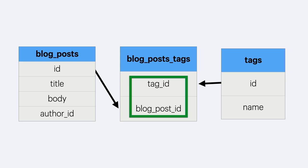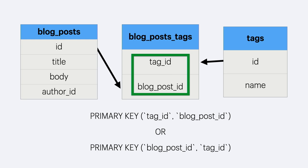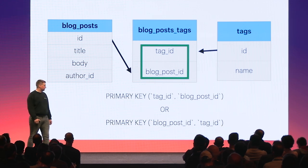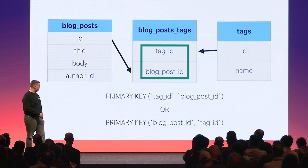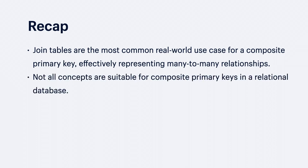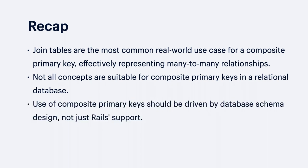When defining a composite primary key, we have two choices: whether to put tag ID or blog post ID up front. To choose one over another, consider the types of queries you'll be making. If you're most frequently interested in blog posts attached to a single tag, you'll favor tag ID being up front. If you're most often interested in tags attached to a specific blog post, you'll favor blog post ID being up front. Record that join tables are most likely the most natural fit for a composite primary key, and use of composite primary keys should be driven by database schema design.